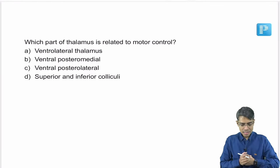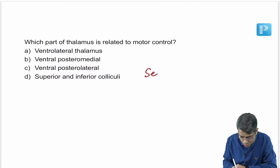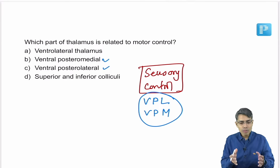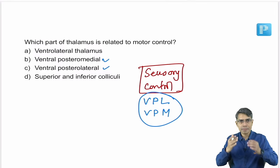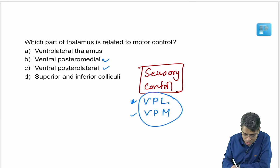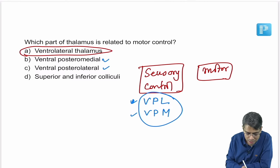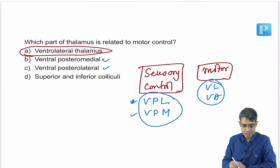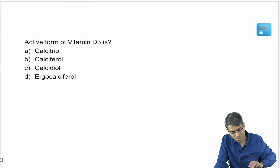Next question: which part of the thalamus is related to motor control? For sensory control, the relevant nuclei are the ventroposterolateral (VPL) and ventroposteromedial (VPM) nuclei — all ascending tracts pass through these. For motor control, the answer is the ventrolateral nucleus of the thalamus.